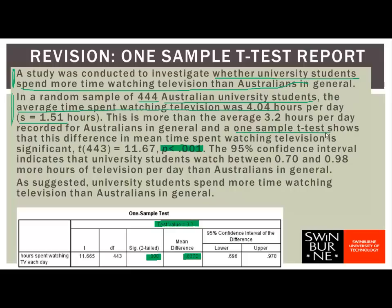We comment that the difference in the mean time is significant, and we back up that statement with the appropriate statistics. We report the degrees of freedom, coming from the output. We report the actual value of the t-statistic, 11.67, also from the output. And we report the p-value: p less than .001.